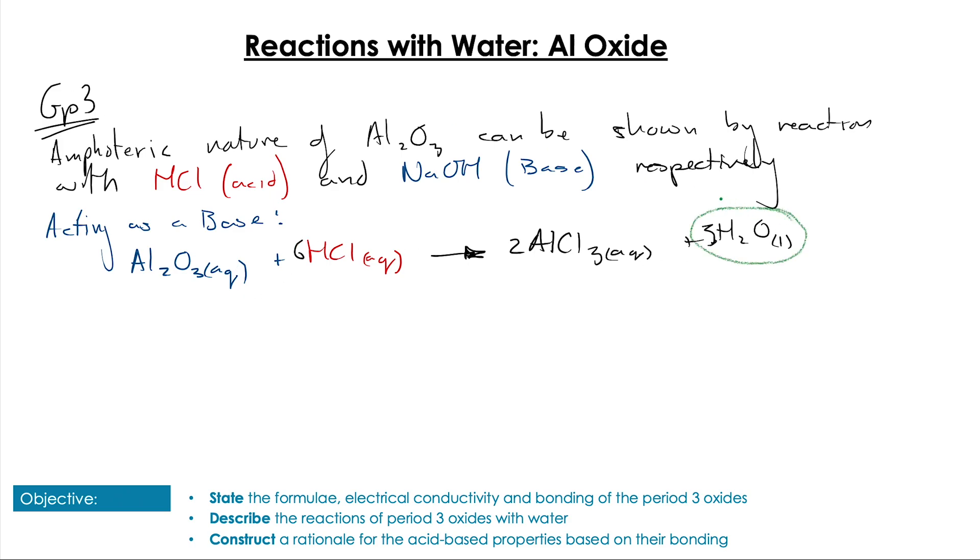However, if we expose this to a solution of concentrated NaOH, it can also act as an acid. We can have our aluminium oxide, as we did before, reacting with NaOH, which will form NaAlO2, and of course, as it's a neutralization reaction, water will also be formed, showing that aluminium oxide can act as both an acid and a base.